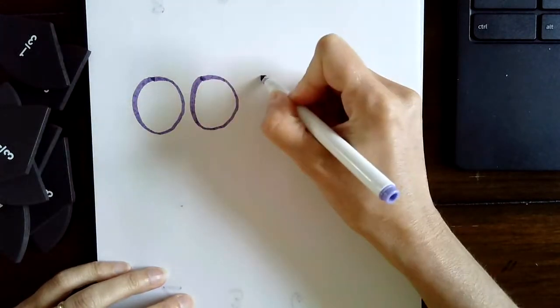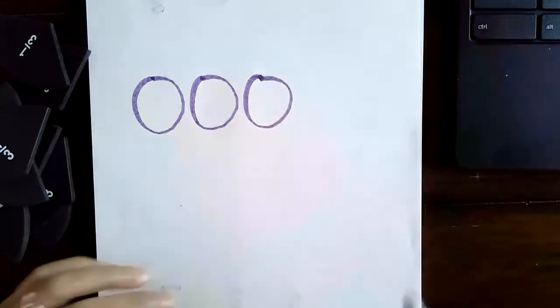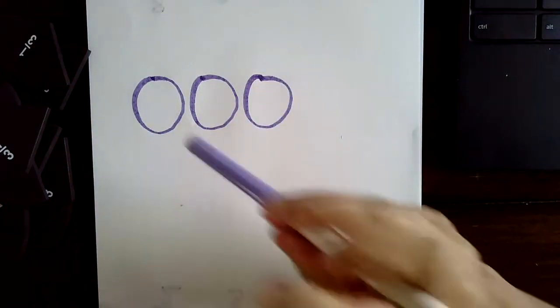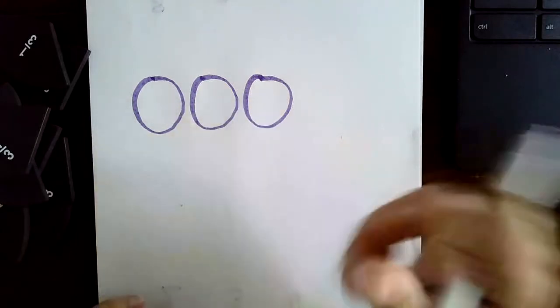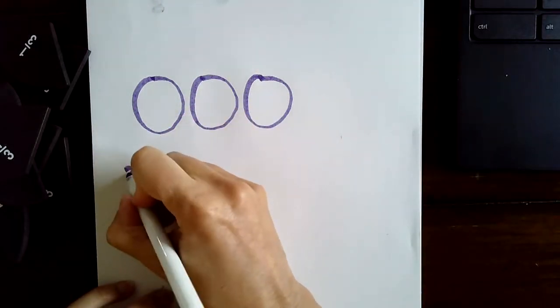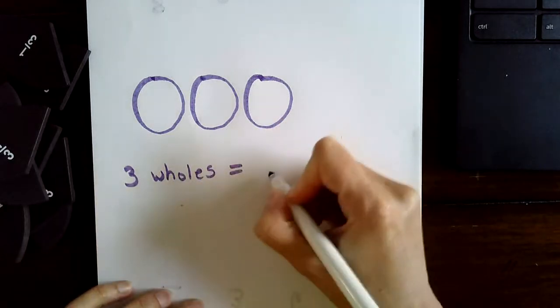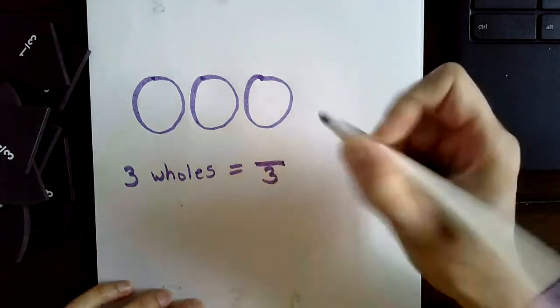Try to make them the same size. One, two, three. Okay, and we are going to try and figure out how many thirds are in three wholes. So under that, I'm going to write three wholes is equal to how many thirds?